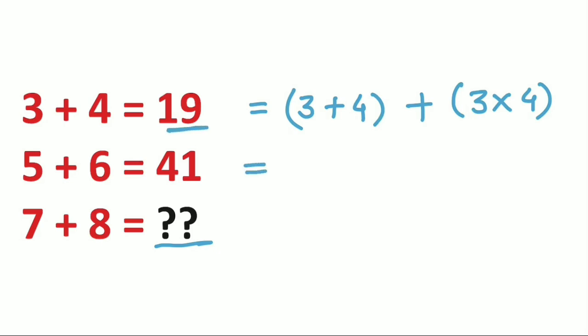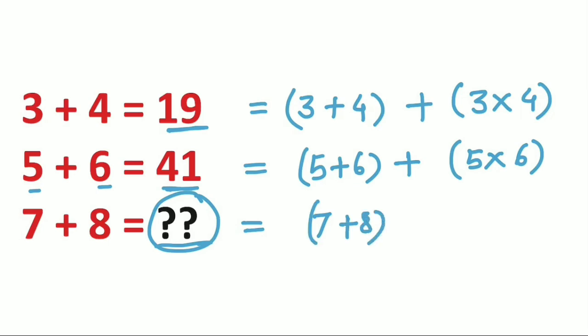Similarly, we can write this 41 as 5 plus 6. We are adding this 5 and 6. Add this with 5 times 6, right. 11 plus 30 gives us this 41. So for this you just add 7 plus 8 to 7 into 8. That means it is just 71. So answer is 71.